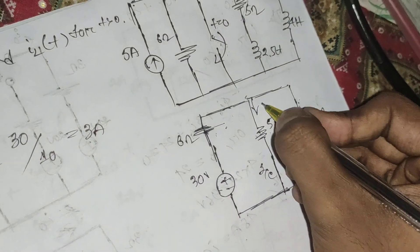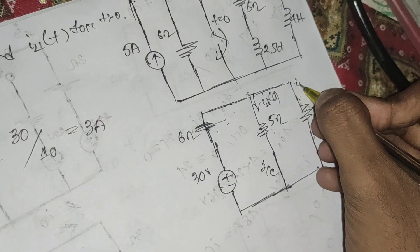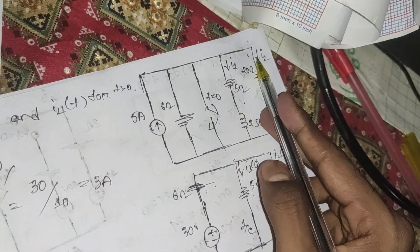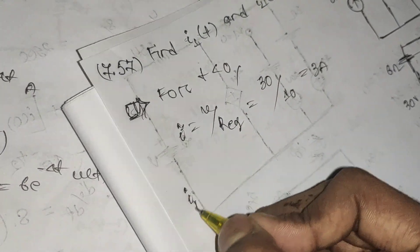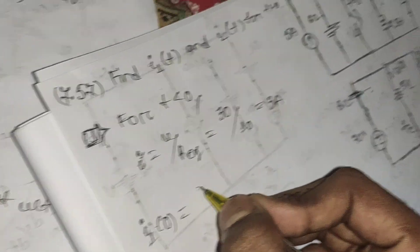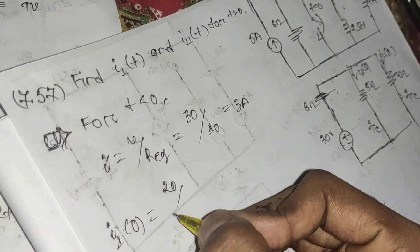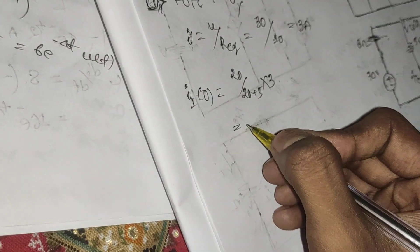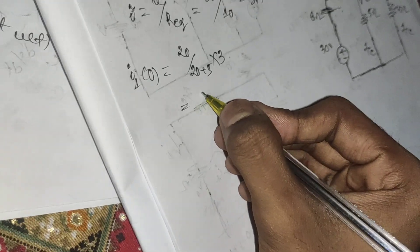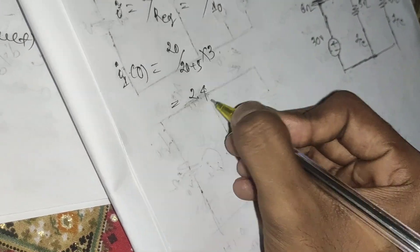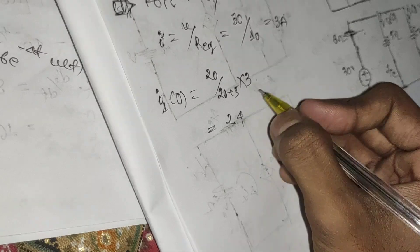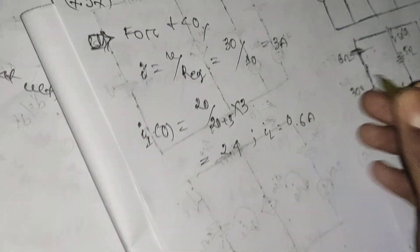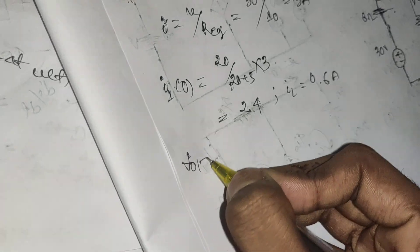Now calculate i1(0) and i2(0) using the current divider. i1(0) = (20 / (20 + 5)) × 3 = (20/25) × 3 = 2.4 amperes. The remaining current i2(0) = 3 − 2.4 = 0.6 amperes.